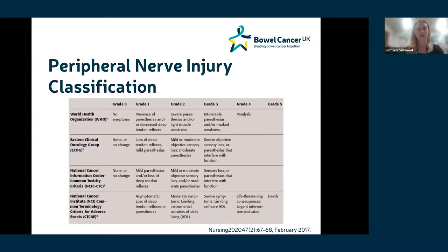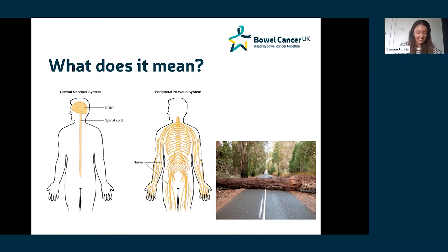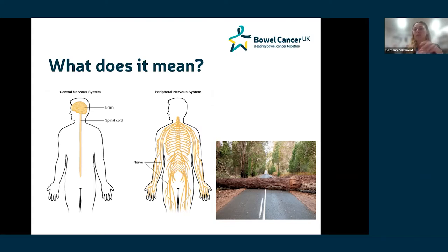Our bodies are made up of two nervous systems. The central nervous system — your brain and spinal cord — is the control centre. Using a motorway analogy, this is like a motorway with several lanes and directions. If there's an issue in the pathways, there are other lanes and routes to divert traffic, so generally you wouldn't expect to experience symptoms if this was affected following chemotherapy.